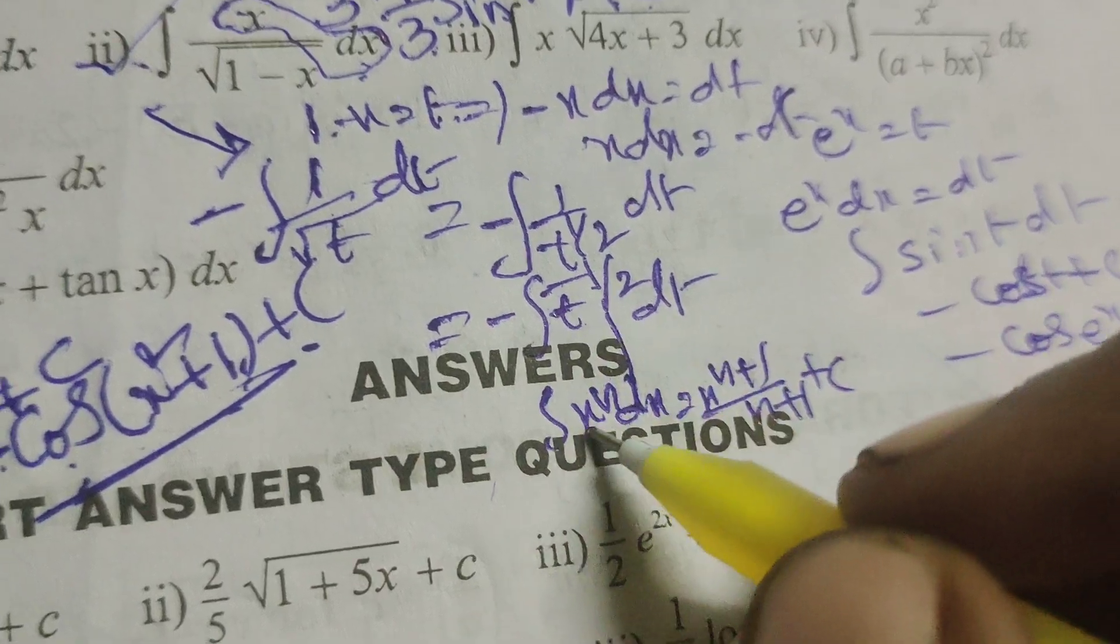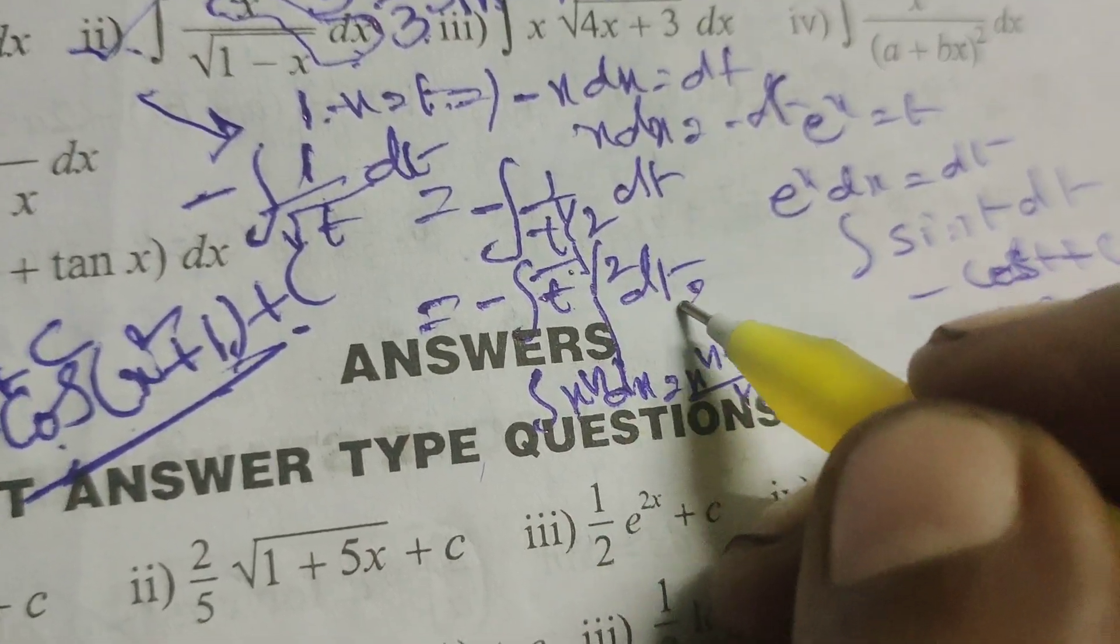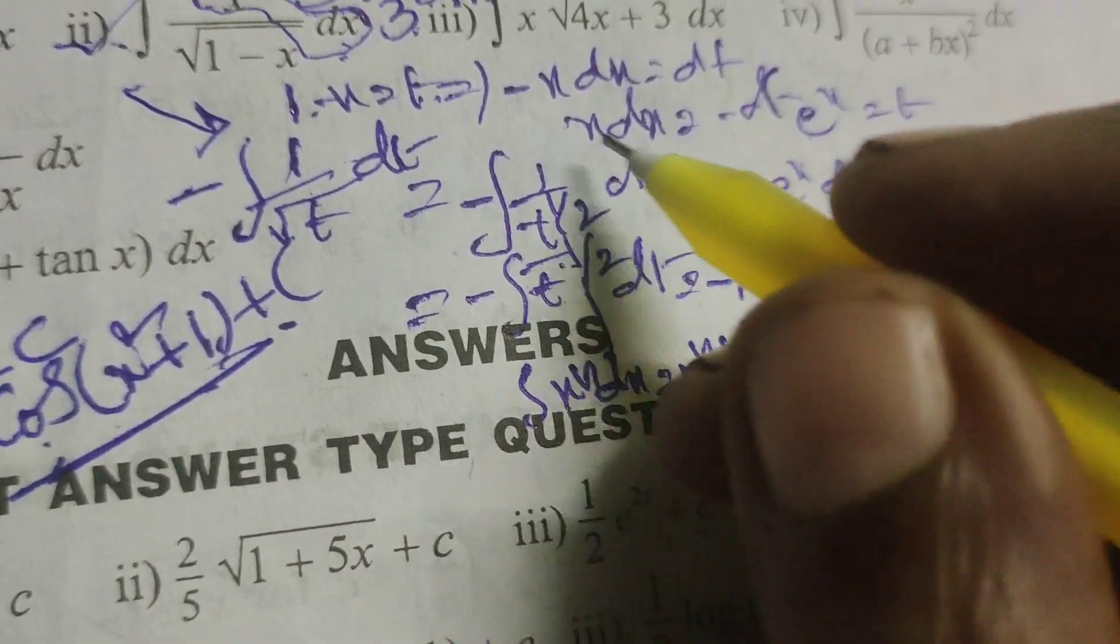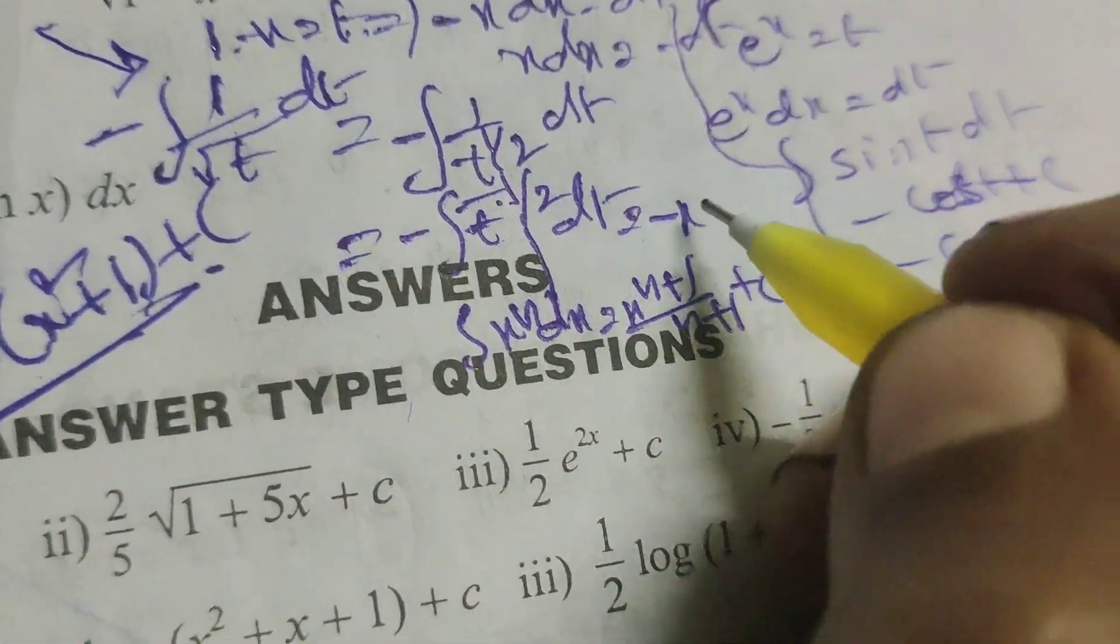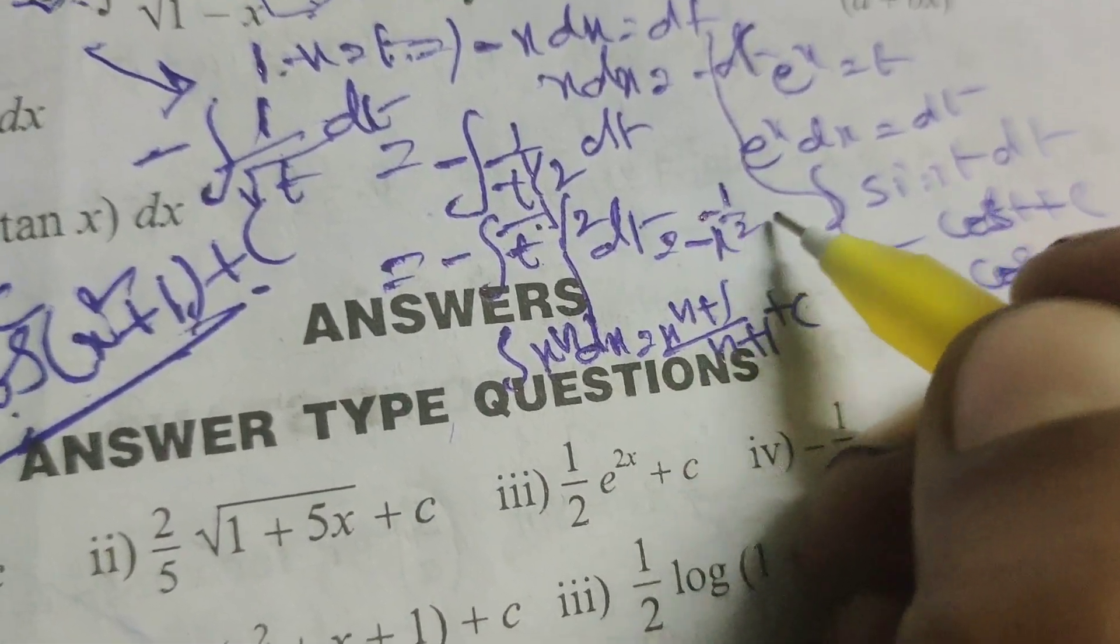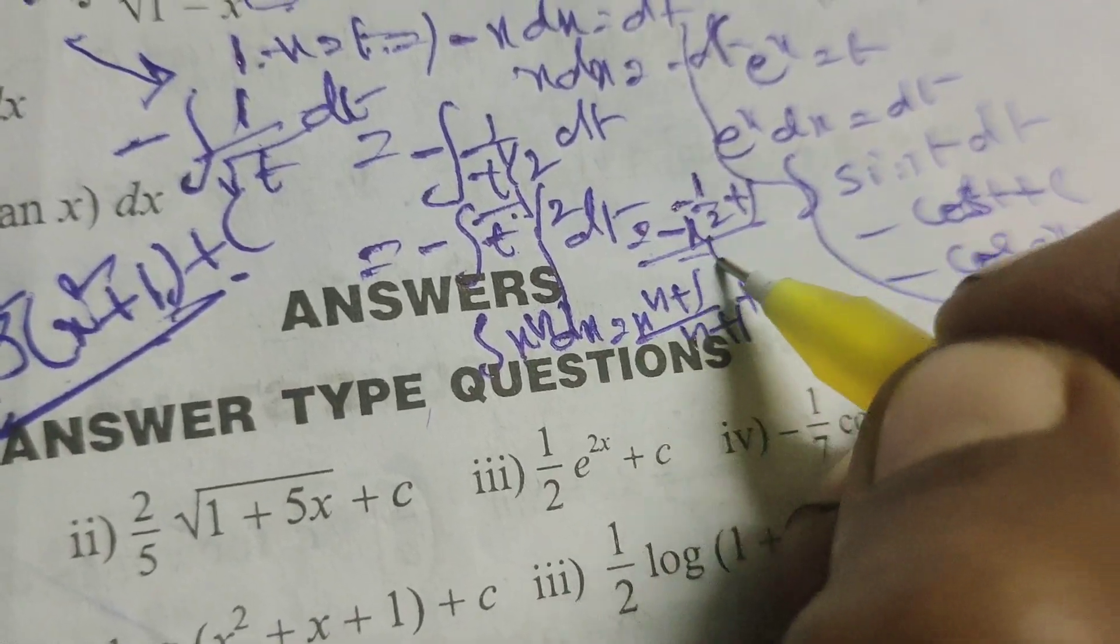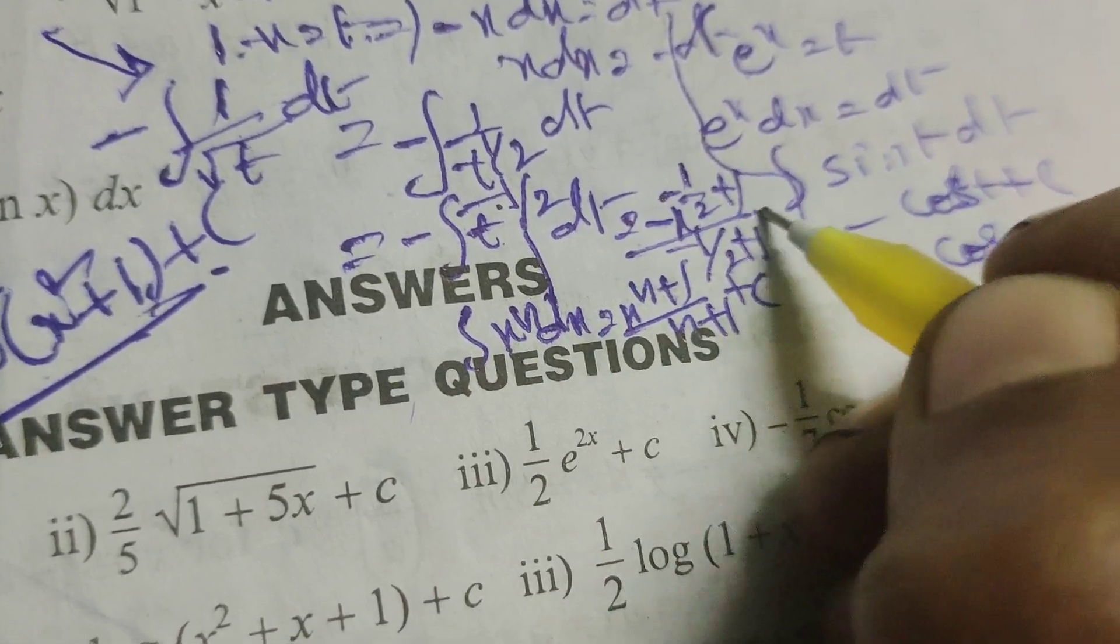Here x means t is there and n means minus 1 by 2 is there. Therefore minus t power minus 1 by 2 plus 1, by minus 1 by 2 plus 1, plus c.